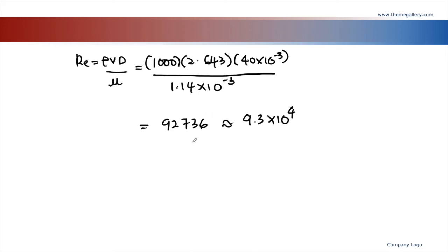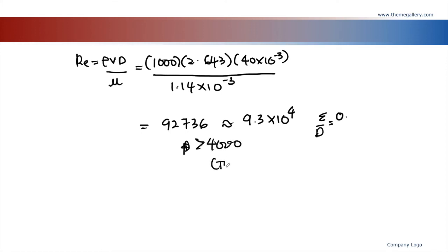To refer to Moody's chart, convert to scientific notation: 9.3 times 10⁴. We have Reynolds number and relative roughness epsilon over D equals 0.002. For the previous laminar case we didn't use epsilon over D because laminar friction factor doesn't depend on it — only on Reynolds number. But here Re is much greater than 4000, which is turbulent flow, so friction factor depends on relative roughness.